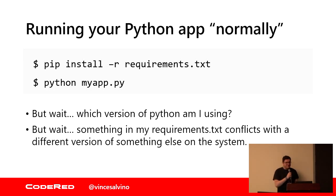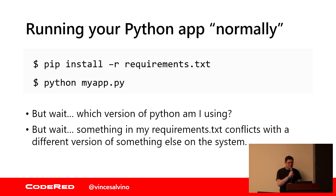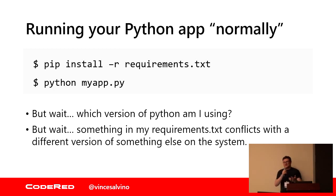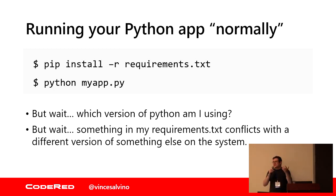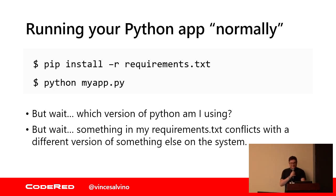Why should I care? Let's just talk about running a Python app normally. Probably everyone in this room uses pip. You pip install your requirements. You run your app with Python. Cool, it worked. All my dependencies are somewhat managed through requirements.txt. But wait — what version of Python am I using on my system? Is it 2.7? Is it 3.3? Is it 3.7? Something in my requirements.txt conflicts with a different version. I can only really run one app on my system. If I try to run two and one needs a different version of Python, or a different version of some pip package, the whole thing just breaks.